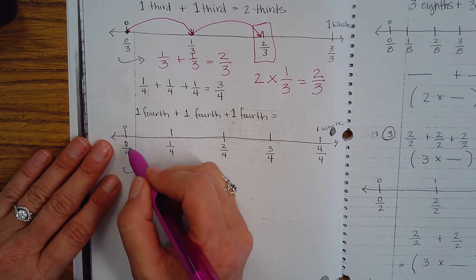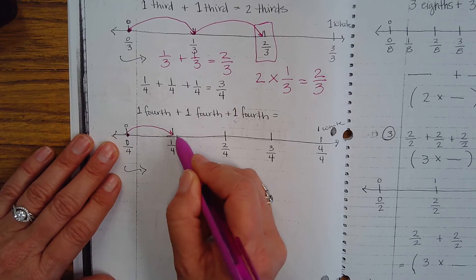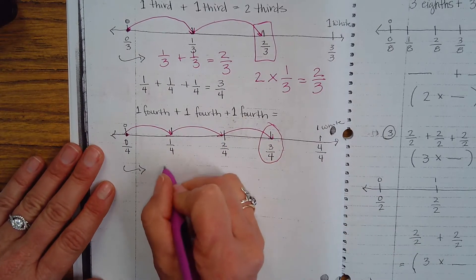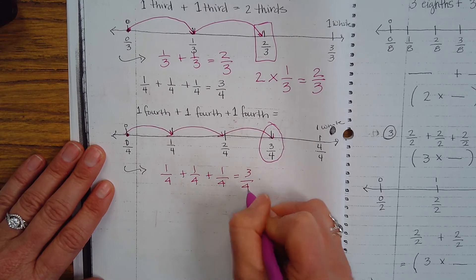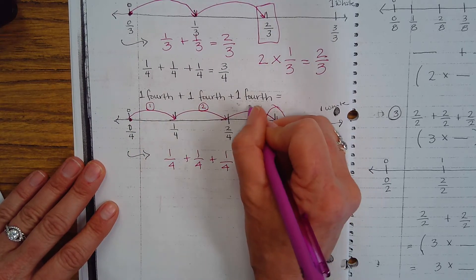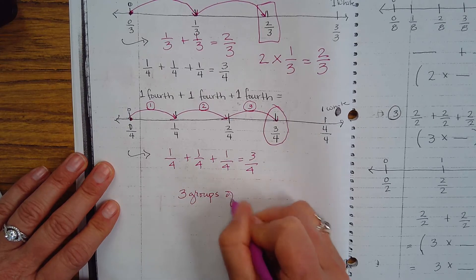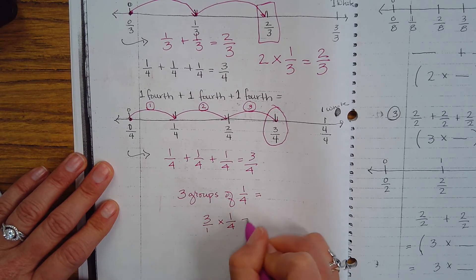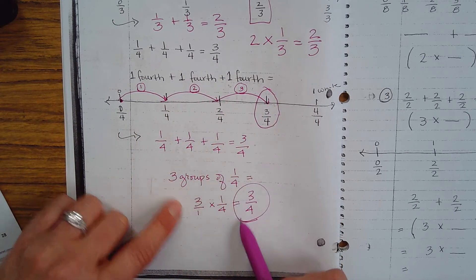Now let's go to fourths. If I start at zero and I have one-fourth, and I add another one-fourth, and I add another one-fourth, I end up at three-fourths. So one-fourth plus one-fourth plus one-fourth equals three-fourths. Another way to think about it: I have three groups of one-fourth, which is three times one-fourth, which equals three-fourths.